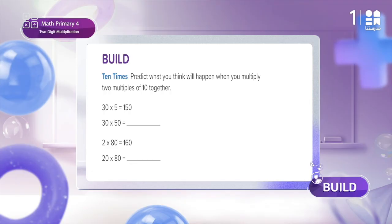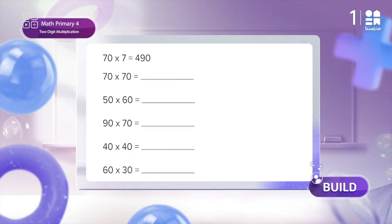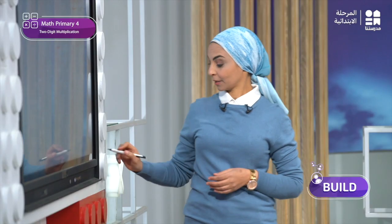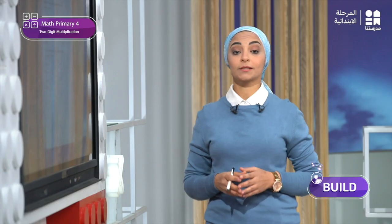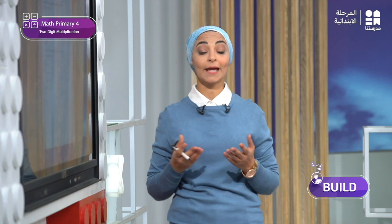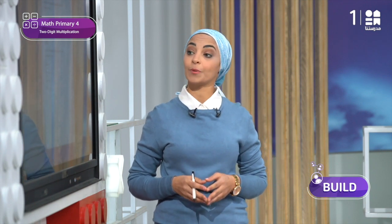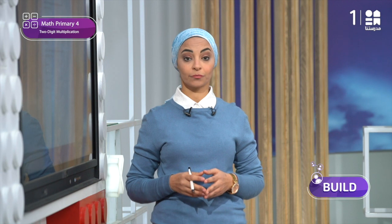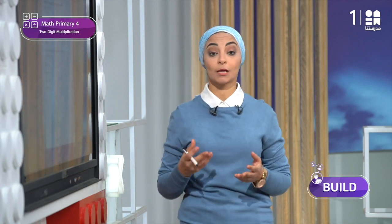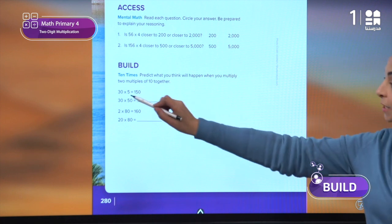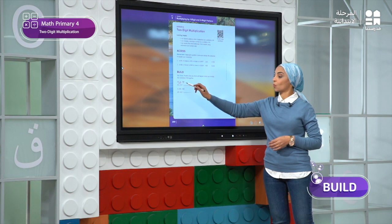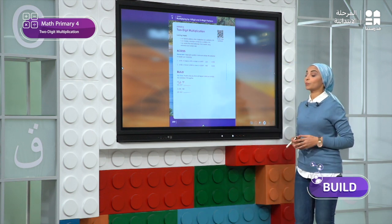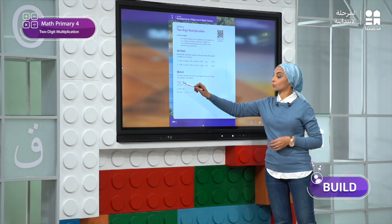On pages 280 and 281: how can you multiply two multiples of 10 together? In the last lessons we learned the patterns of multiplying any digit by multiples of 10. For example, 30 times 5: you multiply 3 times 5 equals 15, and then put the 0 in the ones place. The answer will be 150.